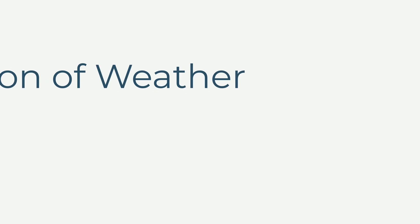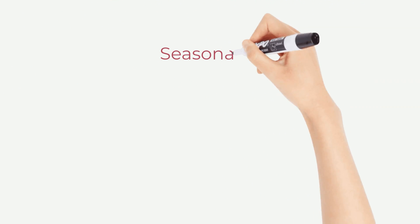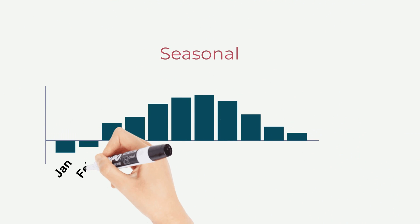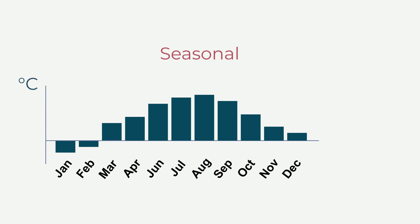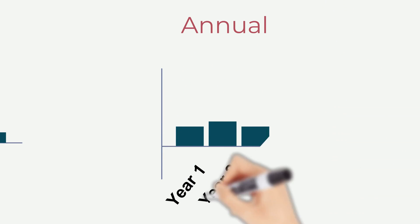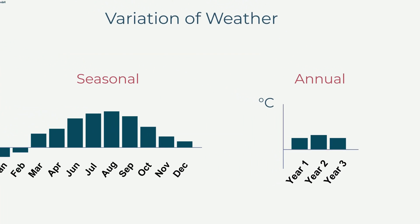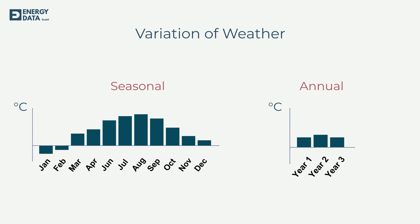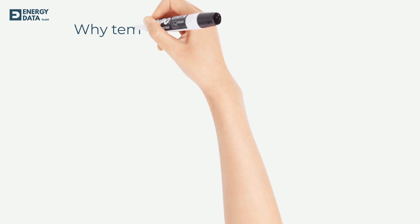In most parts of the world, we have changing outside temperatures throughout the year. In the northern hemisphere, a typical monthly average temperature diagram might look like this — there is a cold period in winter and a hot period in summer. In most regions, we can also see an annual change in average temperatures.